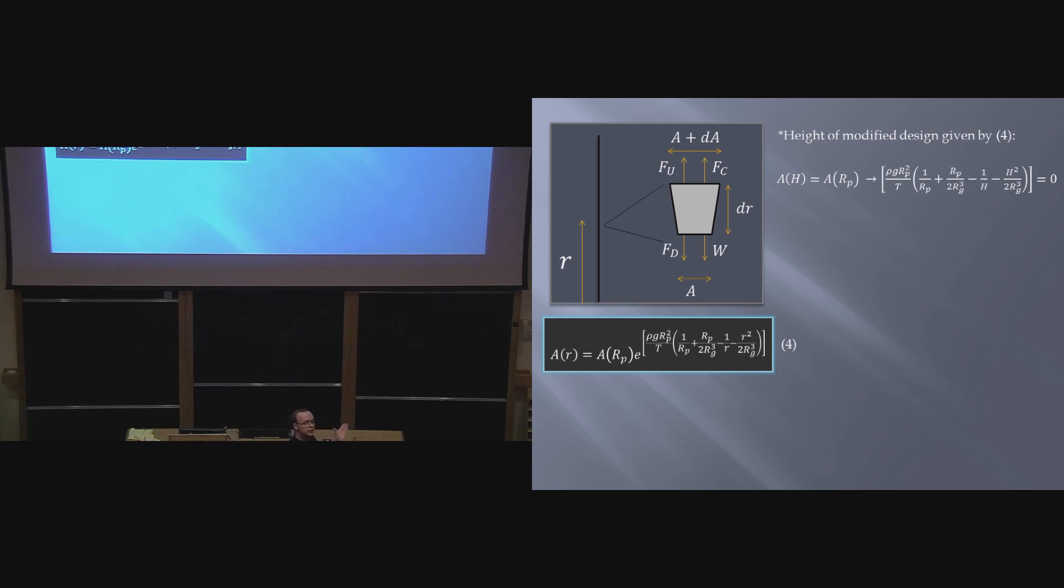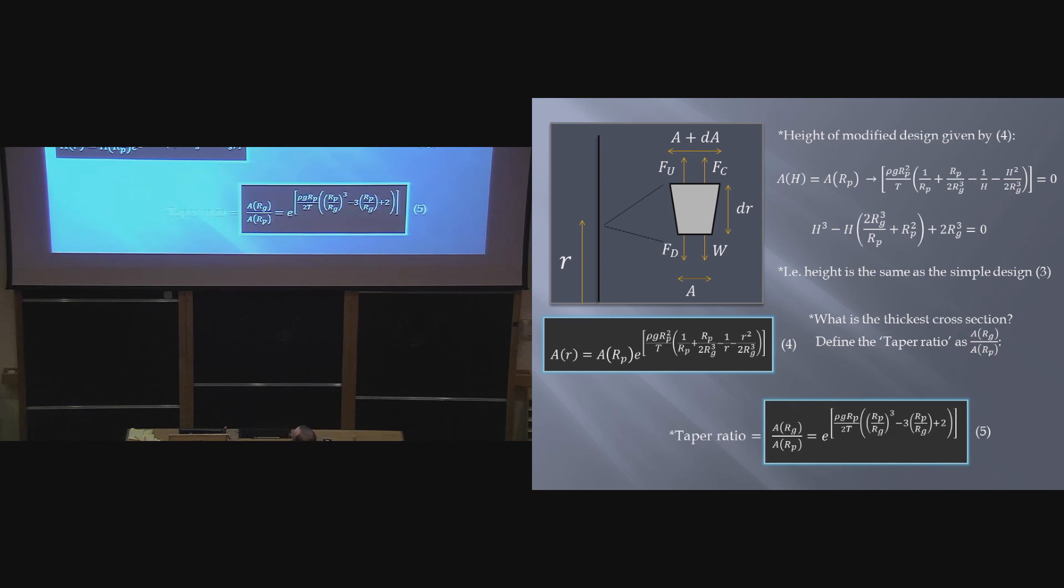But there's some other things we can get out of this as well. Again, we can work out the height of our elevator by noting that the cross-sectional area at the top will be the same as the cross-sectional area at the planet as a boundary condition, which tells us that the argument of our exponential will be zero, and that incidentally gives us the exact same cubic equation, so the height of our elevator is the same in this case, 150,000 kilometers. And one thing I'm going to note for just future reference, I'm going to find something called the taper ratio, because the problem is nothing determines what this cross-sectional area is at the planet. I can specify whatever I want, so what we're interested in is the ratio between them. Basically, you start off with an elevator this wide, how much wider is it going to be by the time we get out to geostationary orbit, and this is the taper ratio.